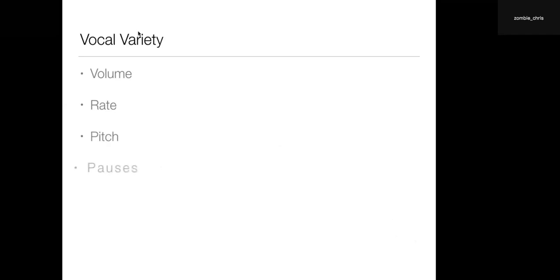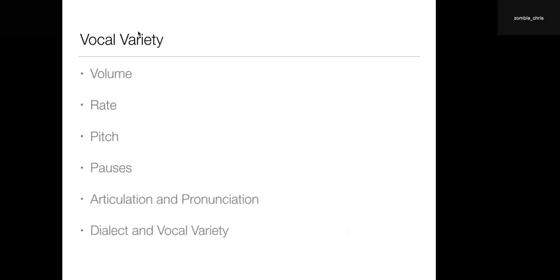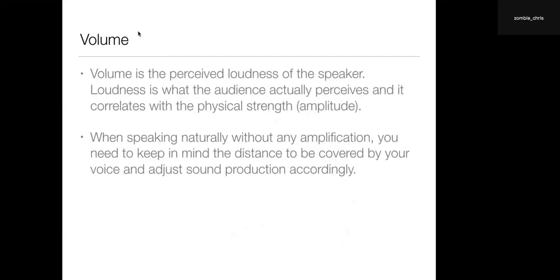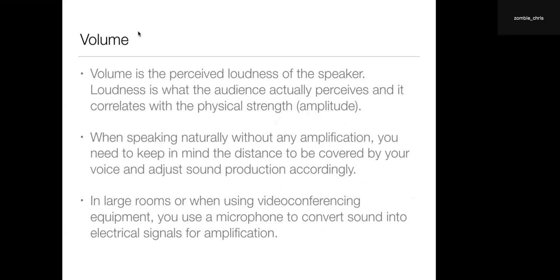When we talk about vocal variety, we talk about volume, rate, pitch, use of pauses, articulation and pronunciation, and dialect — which can add vocal variety to your actual language. Volume — things can go louder or quieter; you can get things more intimate by whispering or lowering your voice. Be aware that if you're using a microphone, you'll need to accommodate that in your delivery. It's always worthwhile practicing your speech on the actual stage that you'll be giving so that you're familiar with it.